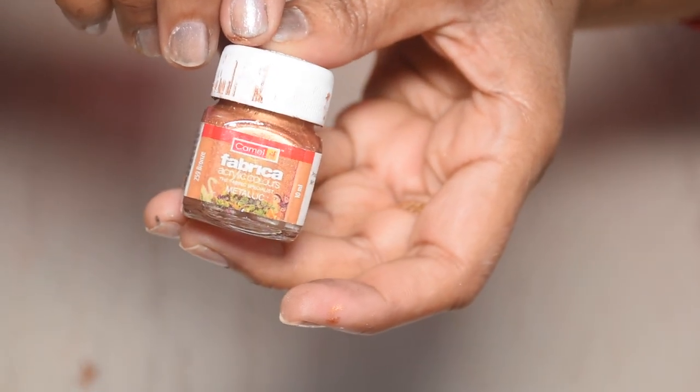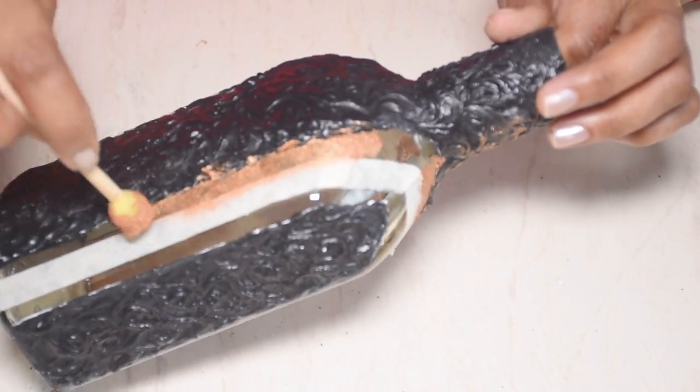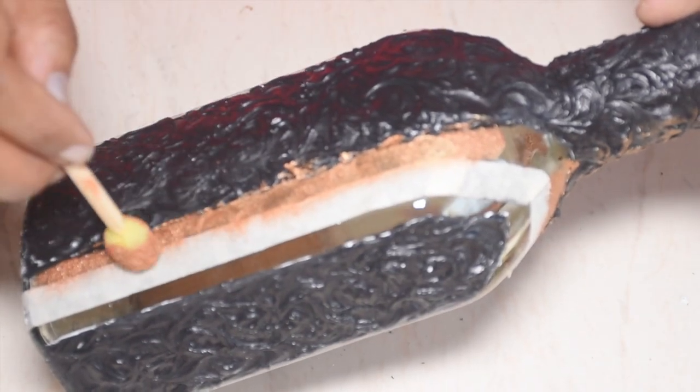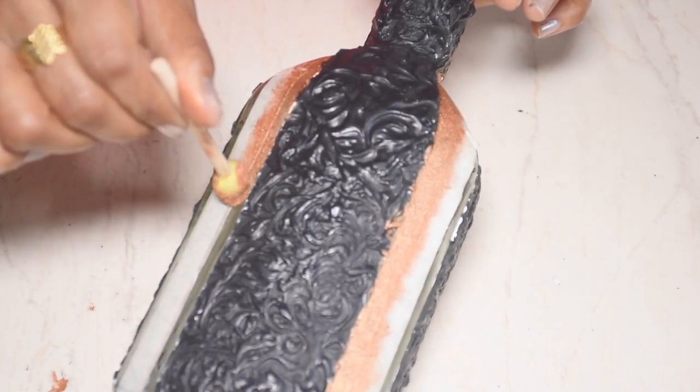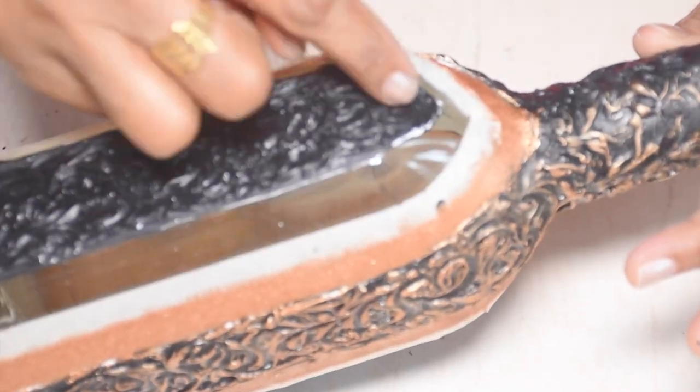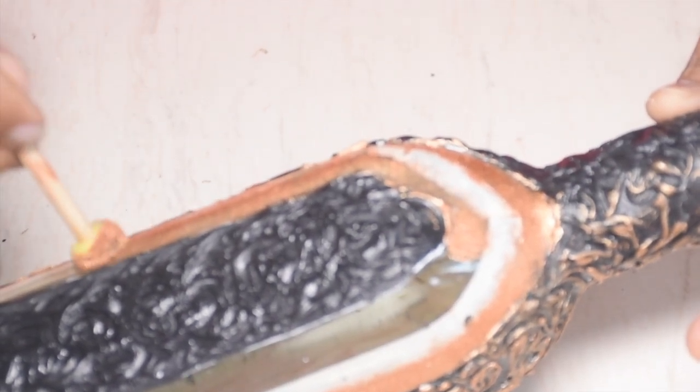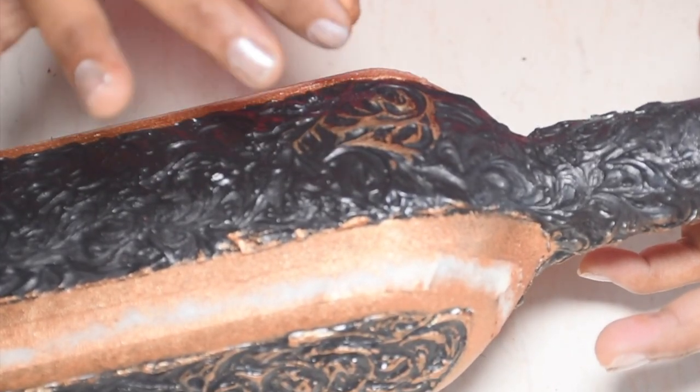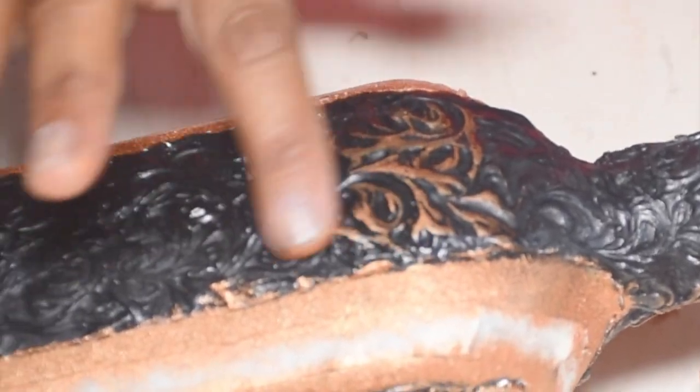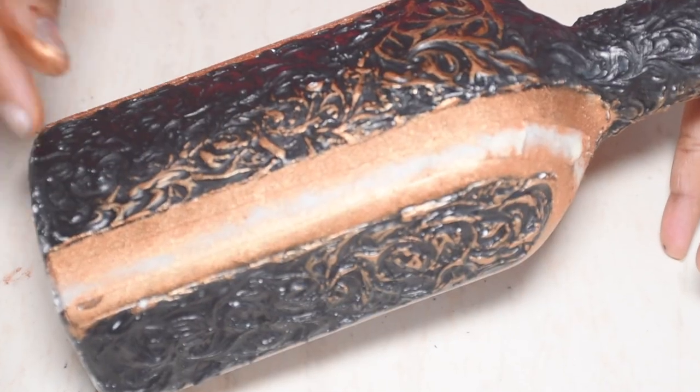Now we use copper metallic color. I paint the edges with a foam brush. Put the copper color on your finger and tap on the texture. With this coloring, the texture becomes highlighted. Apply this method to the whole texture.